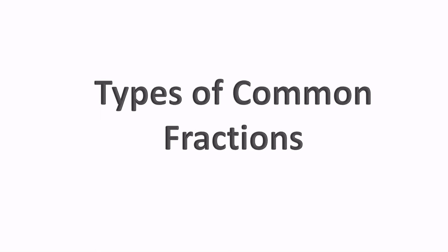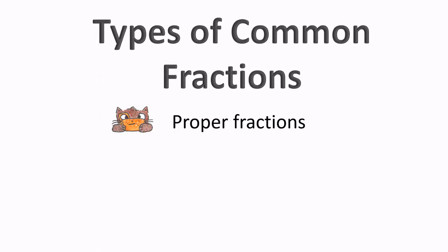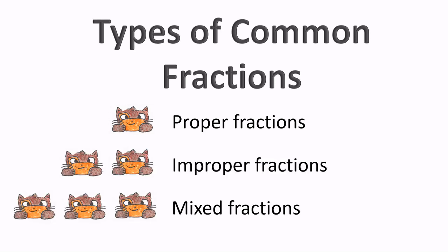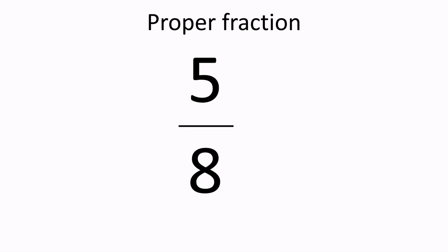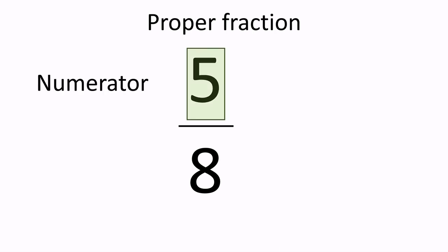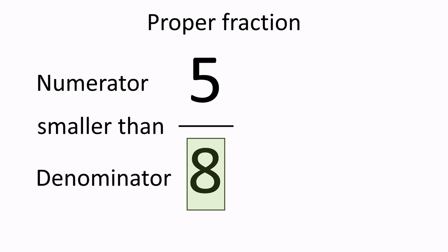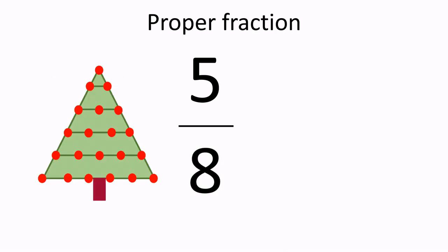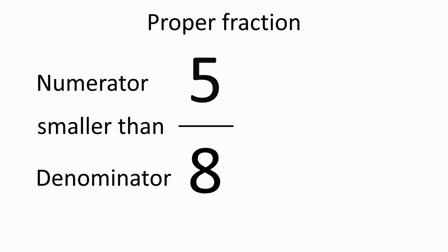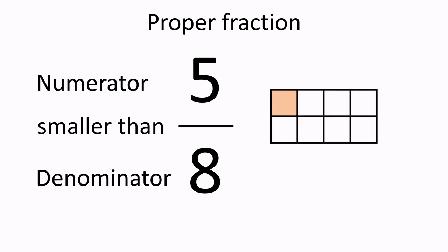Now, let's talk about types of common fractions. We have three types: proper fractions, improper fractions, and mixed fractions. In a proper fraction, the numerator — top number — is smaller than the denominator — bottom number. You can think of it as a Christmas tree: a little bit of branches on the top and a lot on the bottom. In this example, five is smaller than eight, so five-eighths is a proper fraction. Five-eighths also means we are talking about five parts out of eight equal parts in total.